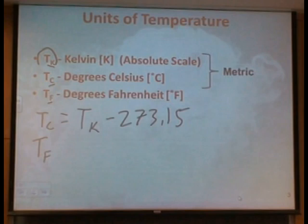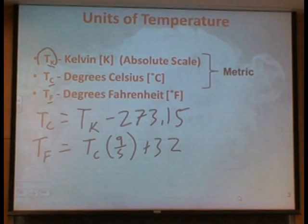If we want to go T sub F, so we want to get to Fahrenheit from Celsius, we go T sub F equals T sub C times 9 fifths plus 32. So that's a little more difficult to do in your head if you want to do it on the fly.